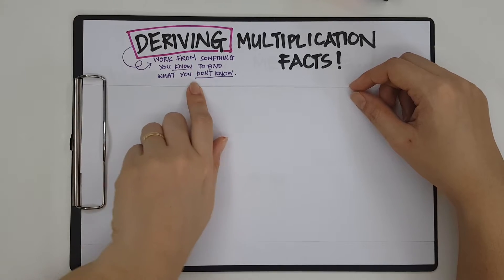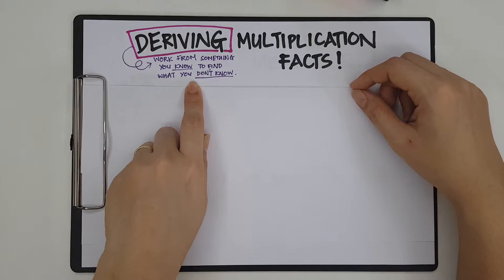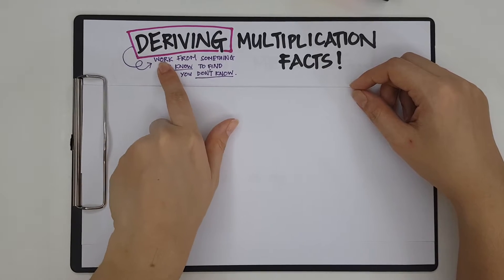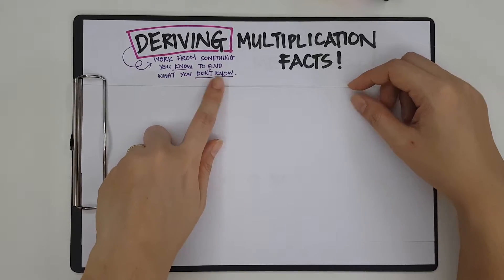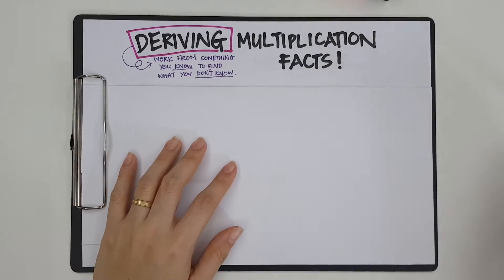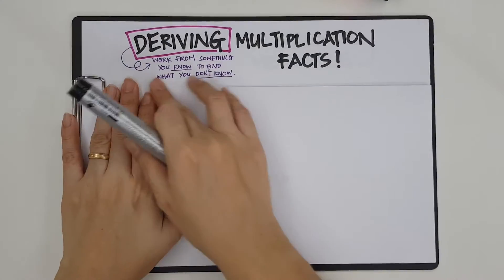So let's begin. What does deriving mean? Deriving means that we are going to work from something that we know to find out something that we don't know. So what is that multiplication fact that you always have trouble with?